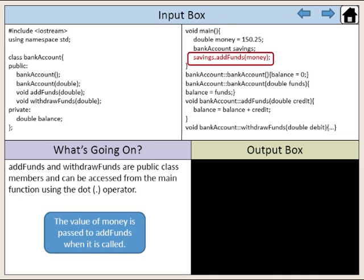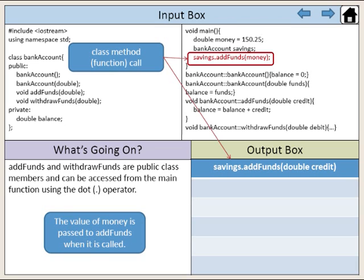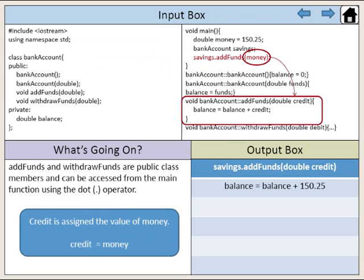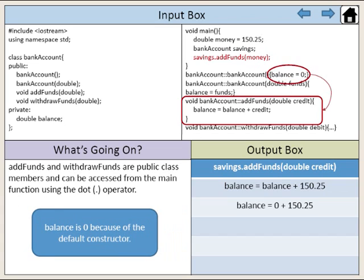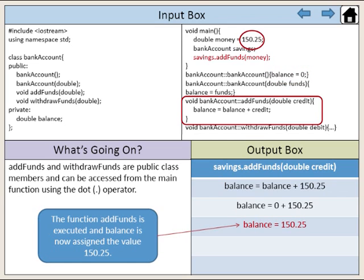Here we have called the class method add funds. The value of money is passed to add funds when it is called. Credit is assigned the value of money. Balance is zero because of the default constructor. The function add funds is executed and balance is now assigned to the value 150.25.